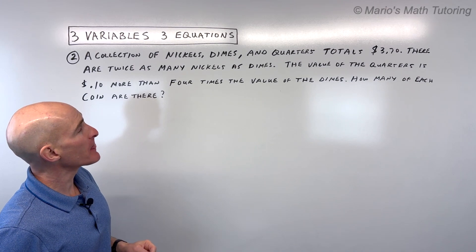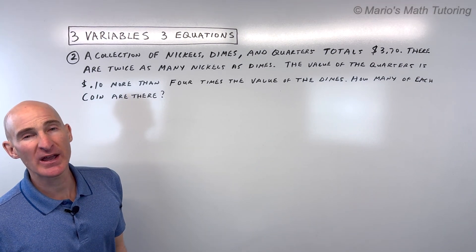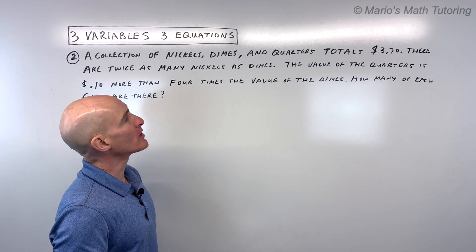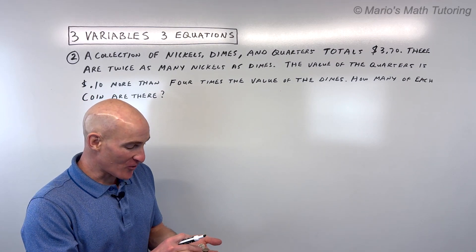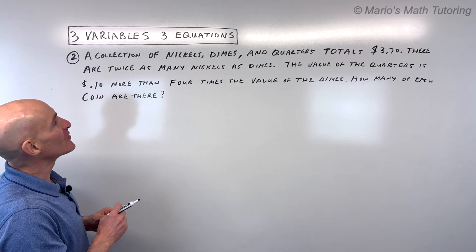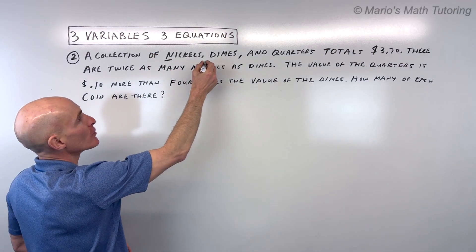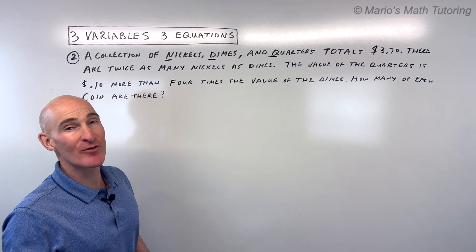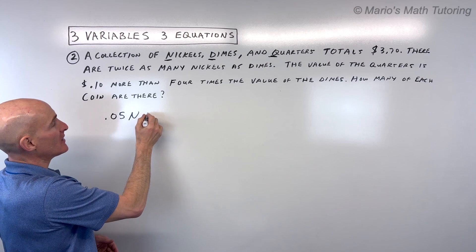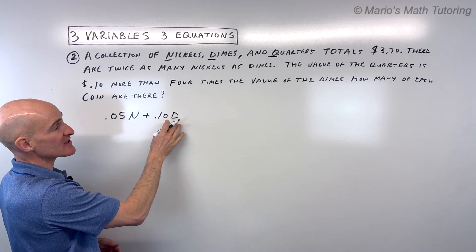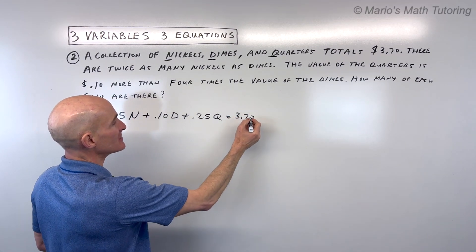Let n be the number of nickels, d the number of dimes, and q the number of quarters — using first letters as variable names. The first equation based on total value: 0.05n plus 0.10d plus 0.25q equals $3.70. The second equation: there are twice as many nickels as dimes, so n equals 2d. The third equation: the value of the quarters equals 10 cents more than 4 times the value of the dimes, so 0.25q equals 0.10 plus 0.40d.